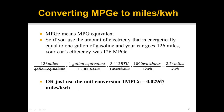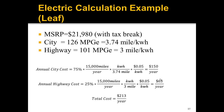Now let's look at the calculation for the Nissan Leaf. We convert miles per gallon equivalent to miles per kilowatt hour. The annual city cost uses the same formula, but instead of miles per gallon we use miles per kilowatt hour, and instead of $4 per gallon we use $0.05 per kilowatt hour. We do the same for annual highway cost with a different miles per kilowatt hour value. The total cost comes to $213 a year — much less than driving on gasoline.